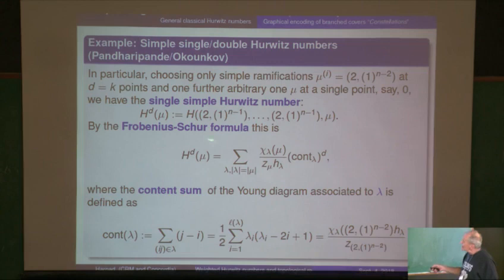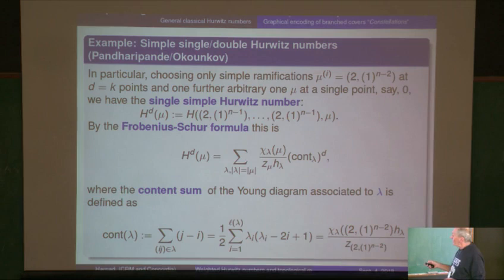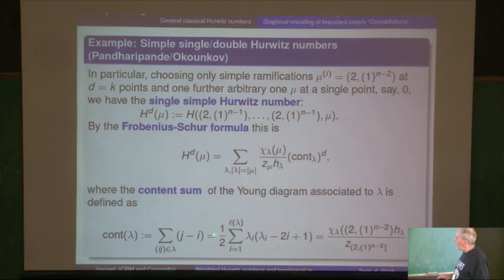From the Frobenius-Schur formula it's given by this expression. In this case, because the co-length of every simple branching is one, when you're counting branch points you're also counting co-lengths. The content sum means you put integers into the Young diagram — zeros along the main diagonal, one above, minus one below, and so on — add it all up, it's an arithmetic series that gives you something quadratic in the parts of the partition. That gives you the value of the character.